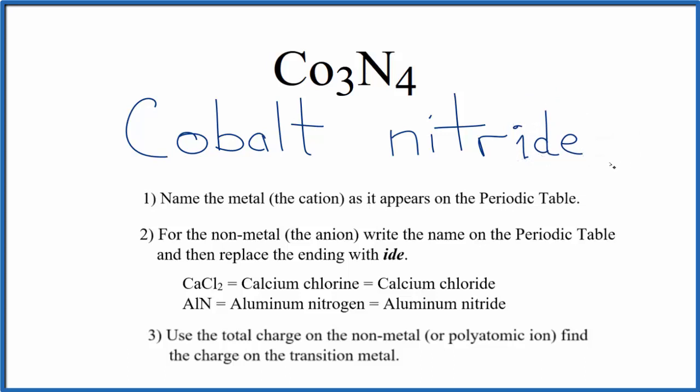So far, we have the name cobalt nitride for Co3N4, but cobalt, that's a transition metal, so we need to take into account the charge. We know that the nitride ion - nitrogen's in group 15, sometimes called 5A - is 3 minus.